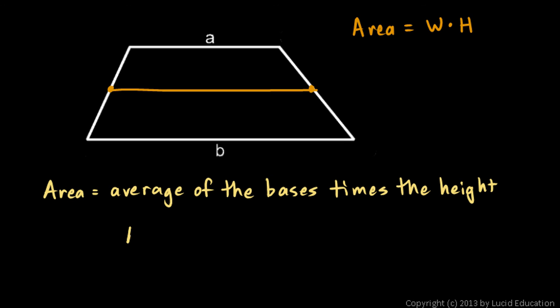We can write that mathematically. The area of a trapezoid is the average of the bases, which is A plus B over 2. That's how we average two numbers—just add them up and divide by 2. And then times the height, times H. You can see that this is mathematically equivalent to the formula we had earlier. We have A plus B and H multiplied together and the two in the denominator.